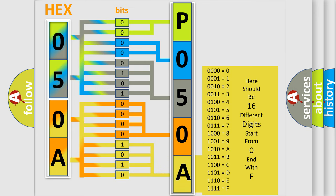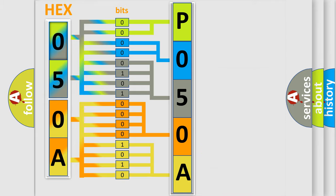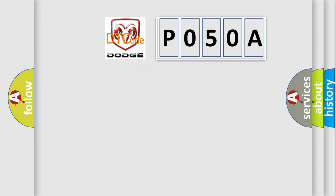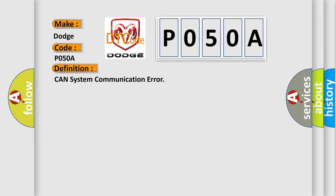We now know in what way the diagnostic tool translates the received information into a more comprehensible format. The number itself does not make sense to us if we cannot assign information about what it actually expresses. So, what does the diagnostic trouble code P050A interpret specifically for Dodge car manufacturers? The basic definition is: CAN system communication error.